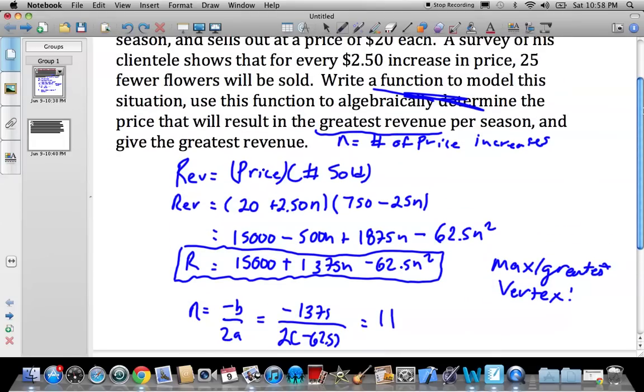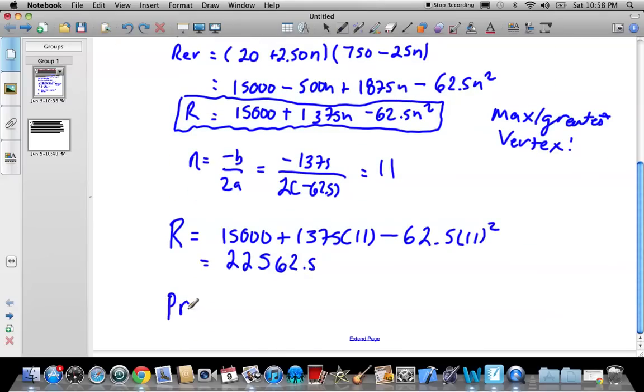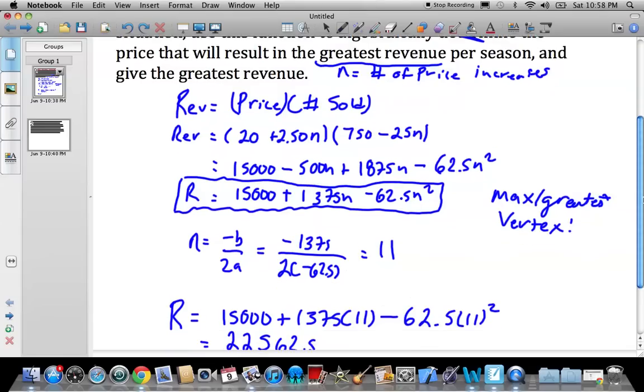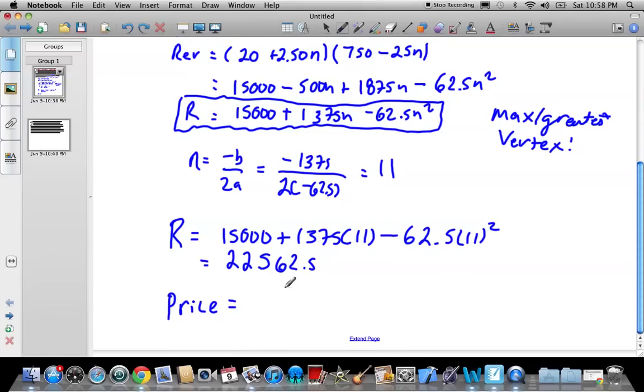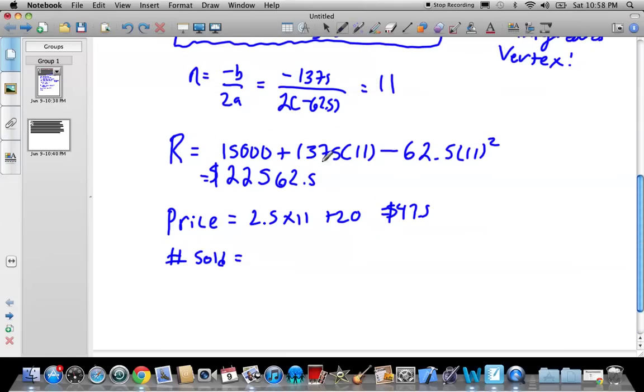Now what we can do is we can actually find the price he sells them at and the number he will sell. So the price he sells them is going to be just 2.5 times 11 plus 20. So 2.5 times 11 plus 20. That's just given in my general form, so I'll put it in here, n equals 11. So that's going to be $47.50. And the number sold, and this is a way of checking that number because this number seems kind of large to me.